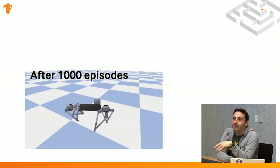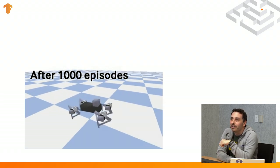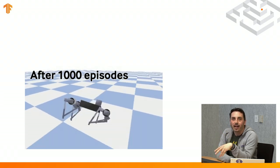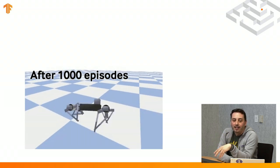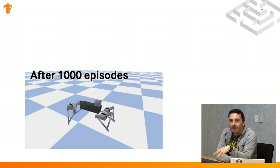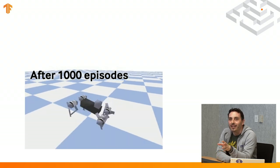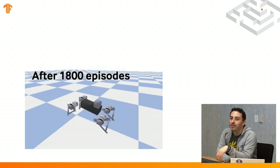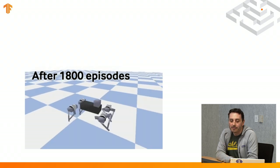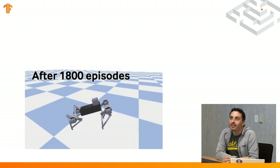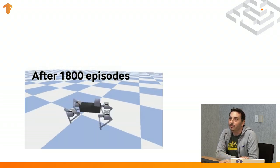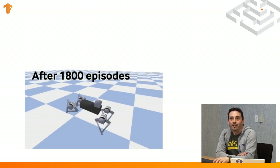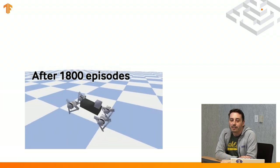Even within RL algorithms, you can see progress happening. After a few trials of learning, this robot is able to move around, wobble a little bit, and then fall — but it can control the legs a little more. After fully training, the robot is able to walk from one place to another and go to a specific location.